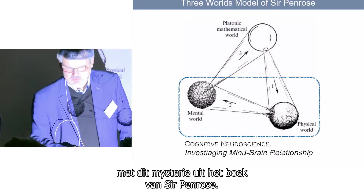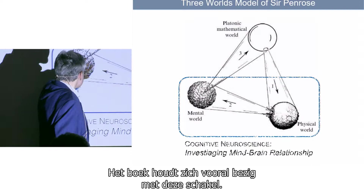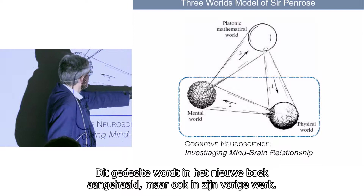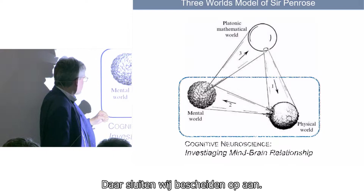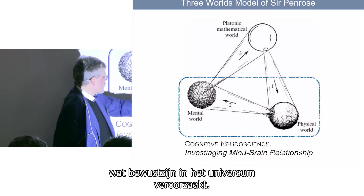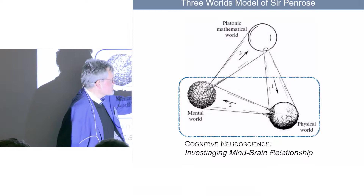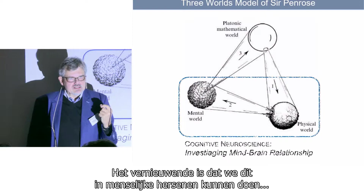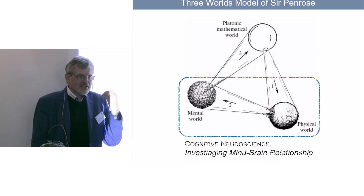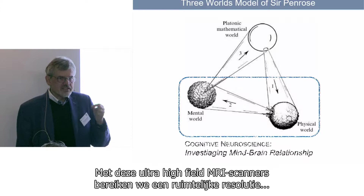The first point I want to make is that we actually link to that mystery of Sir Penrose's book. The book is mainly concerned about this link, and he also touches on it in his current book and previous work. We relate to that, although in a very modest way—we do not solve the critical questions of what makes consciousness appear in the universe, like whether it's a quantum process. We are more modest and look at correlations between what's happening in the mind and what's happening in the brain. The new thing is that we can do this now in the human brain, where we have much better access to conscious states than in animal research.